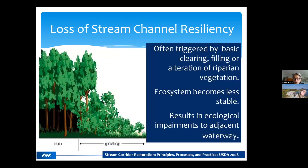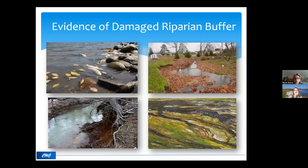As we lose stream channel resiliency as a result of encroachment or damage to that riparian buffer, even simple basic types of activity — such as clearing to create more agricultural land or filling to create more developable land — cause that whole ecosystem to become far less stable. It's more prone to erosion, adjacent properties are more prone to flooding, and as a result of that, we end up creating ecological impairments that impact both the function and the services being provided by that stream and adjacent vegetated zone — the riparian zone.